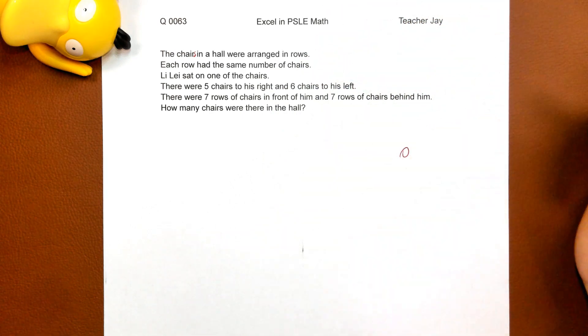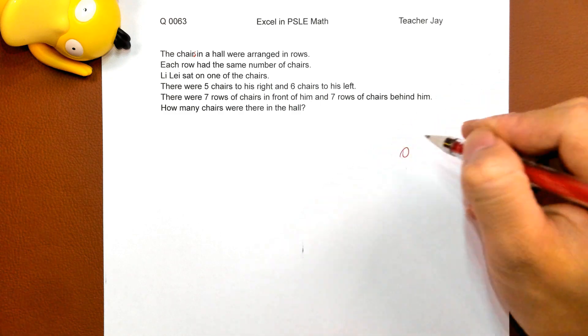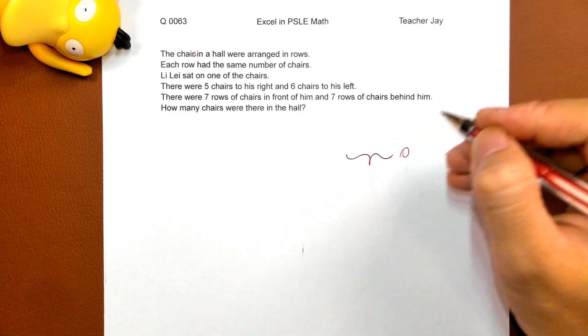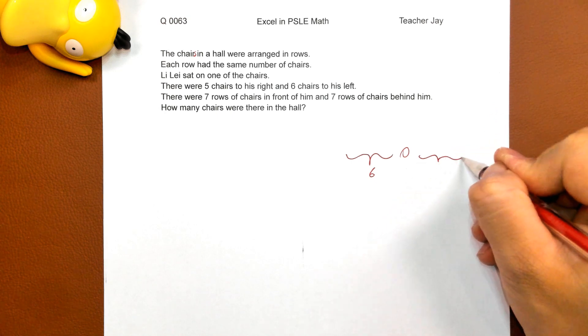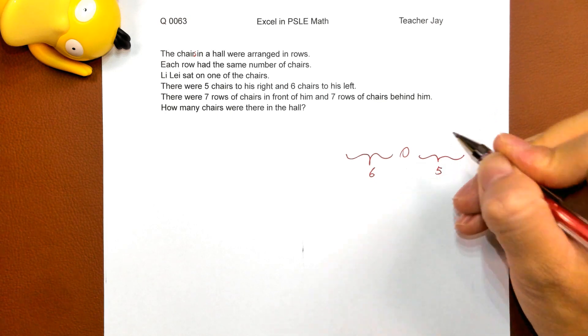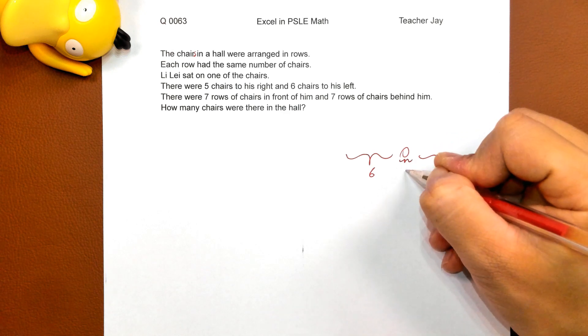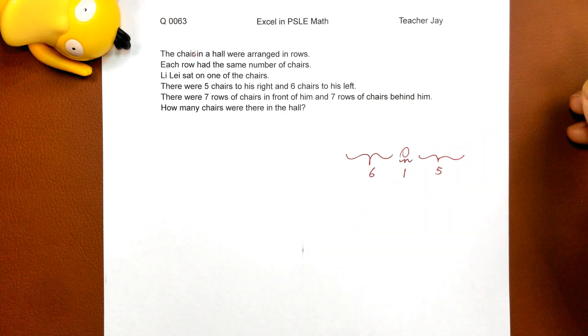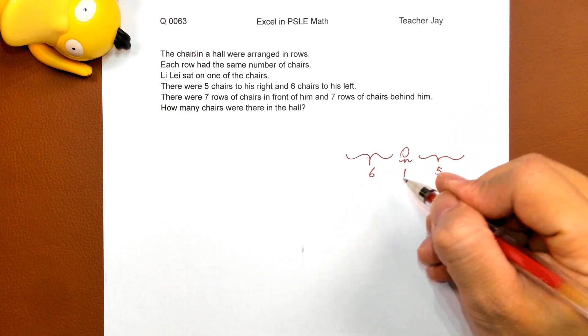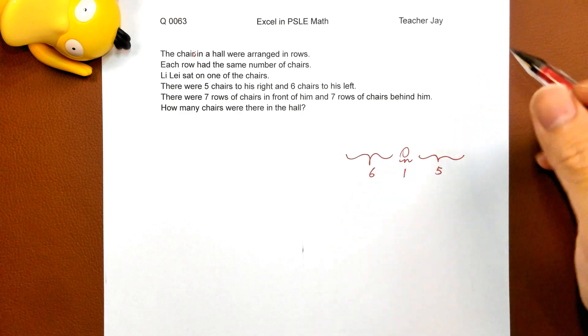So if Li-lei sits here, on the left there are six, and to the right, five, plus himself in the middle. So we know that each row has twelve chairs.